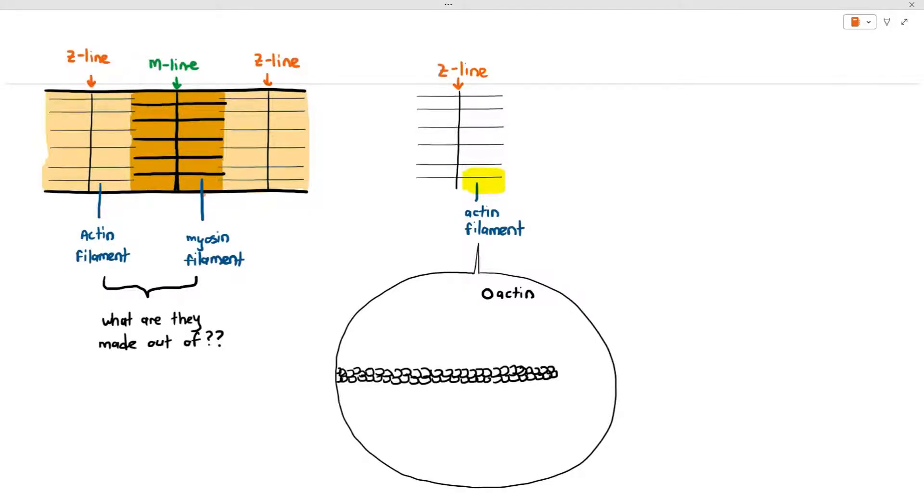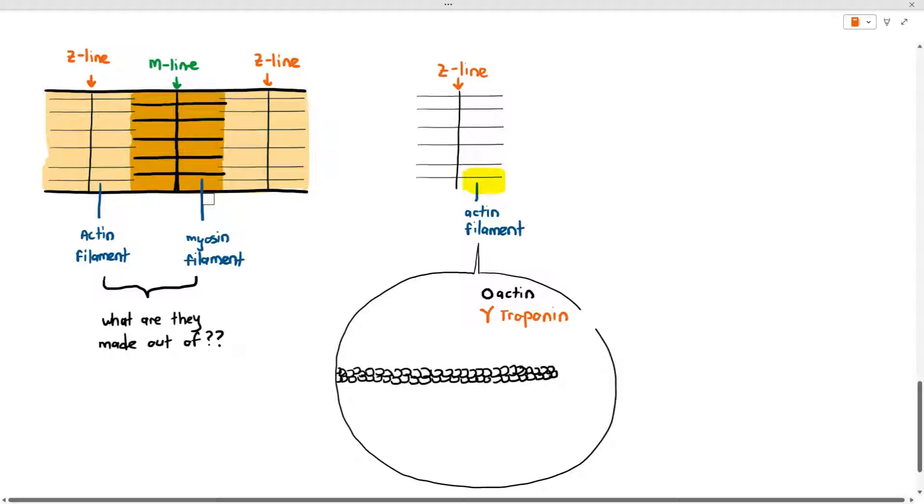But the actin filament is not just that bare thing. There are also other things that need to be joined to the filament to make it become an actin filament. Other things also include something known as troponin. I'm just going to talk about the function immediately.